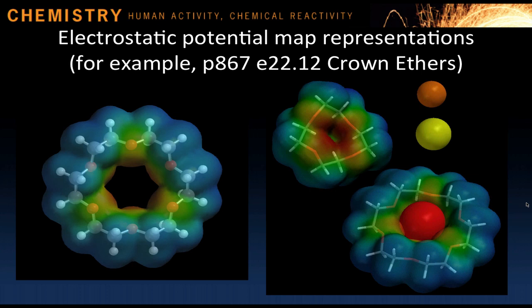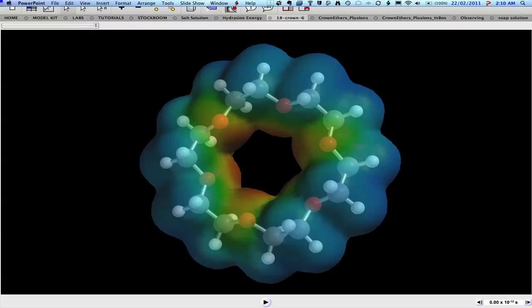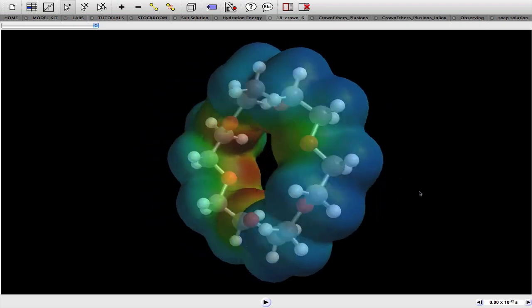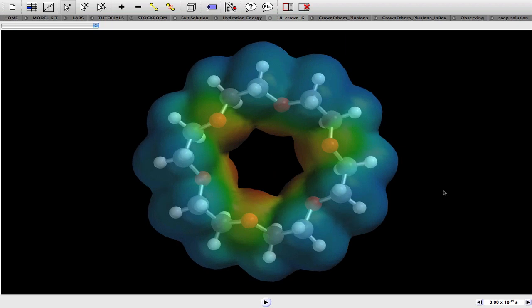In eResource 22.12, two crown ethers are compared, and the student is asked to predict which metal ion would bind most favorably to each molecule. Here you see a crown ether model with a transparent electrostatic potential map on the electron density surface, revealing the ball and stick model within. Although this is one of the least stable conformations, you can clearly see that the central cavity is more electron-rich, indicated by the red-orange color, relative to the outer rim, which is more electron-deficient, indicated by the blue color. Positively charged cations can bind to the central cavity.